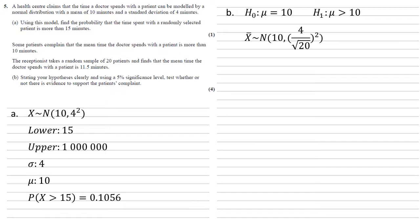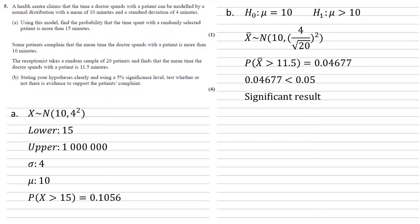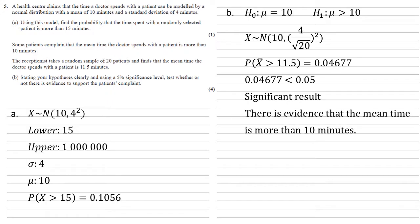Again we solve this using the calculator. This time the lower limit is 11.5 and the standard deviation is 4 over root 20. Putting that into the calculator we get 0.04677. This is smaller than 0.05 for the 5% significance level, so we say it is a very unlikely event — a significant result.